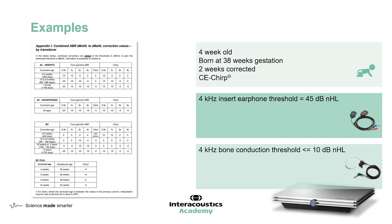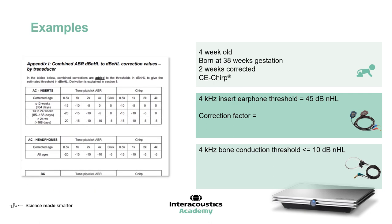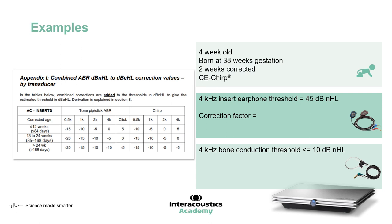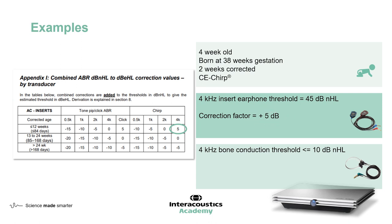To turn the nHL into EHL, we need the right correction factor. Let's think about the insert earphones and zoom in on the inserts correction factors. It's really important that we select the right correction factor from this table — remember, we are adding these values to the nHL thresholds. We're looking at inserts, dealing with chirps, four kilohertz is the frequency tested, and our baby comes under the 12-week age band. That all brings us to a correction factor of plus five. So we're going to add that plus five to our 45 dB nHL, which gives us a corrected threshold of 50 dB EHL.